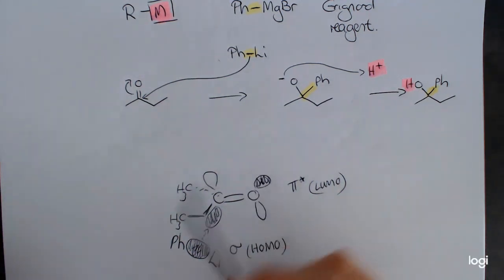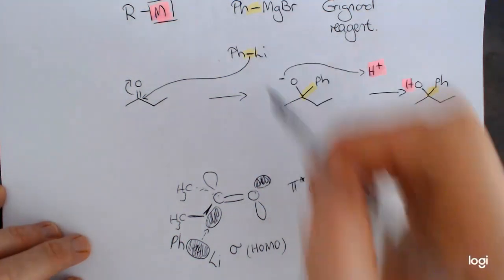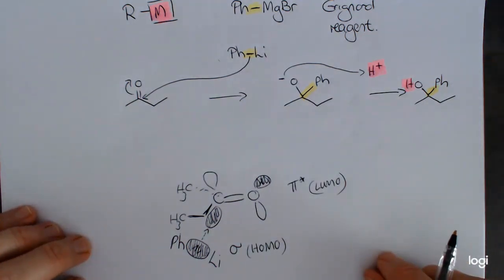So that would be the molecular orbital diagram to describe this interaction for an organometallic, either Grignard reagent or an organolithium reagent.